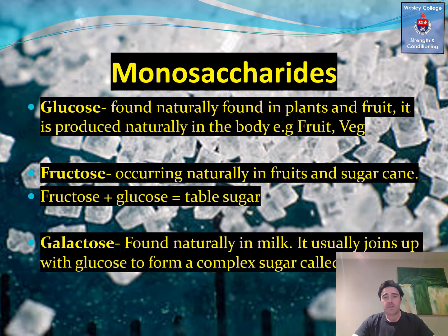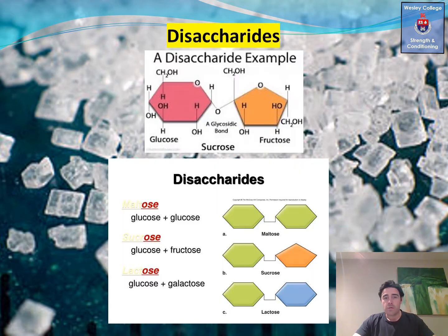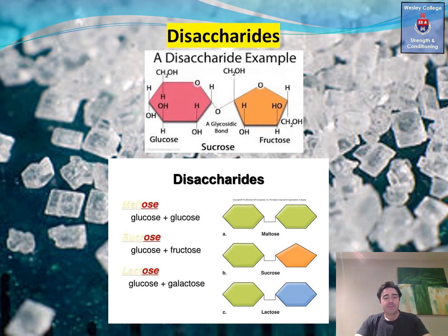Fructose occurs naturally in fruits and sugar cane. When you stick fructose and glucose together you get table sugar — the traditional sugar we know. Galactose is found naturally in milk, and it usually joins up with glucose. When you stick the two of them together you get something called lactose.